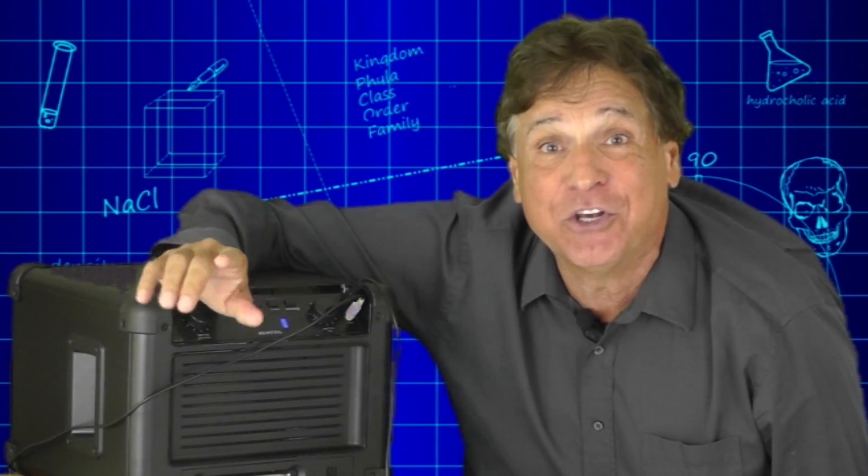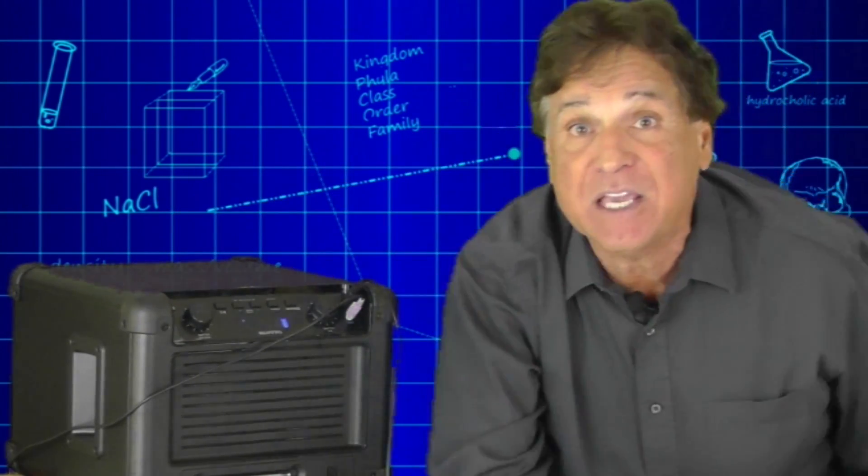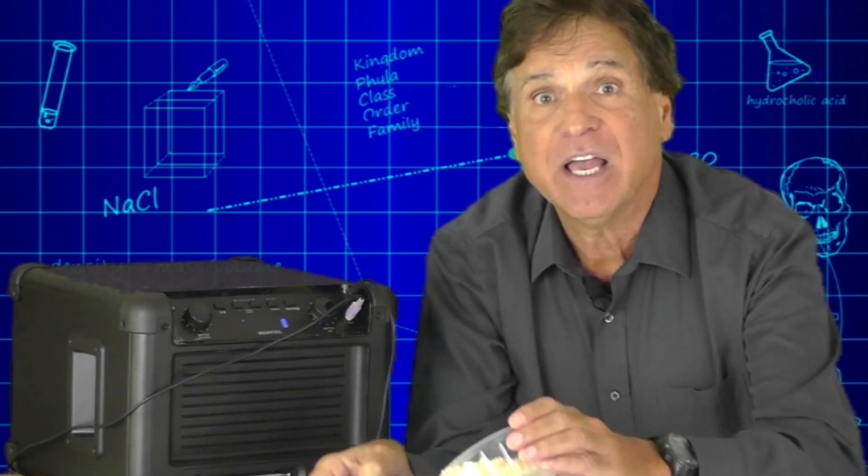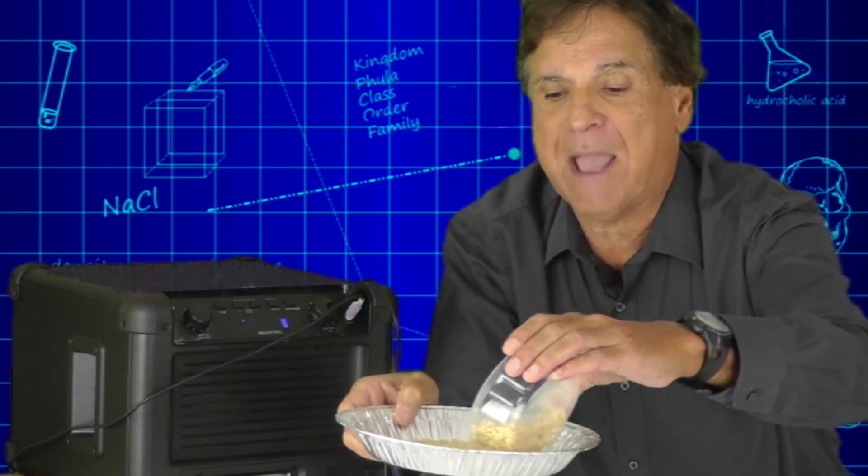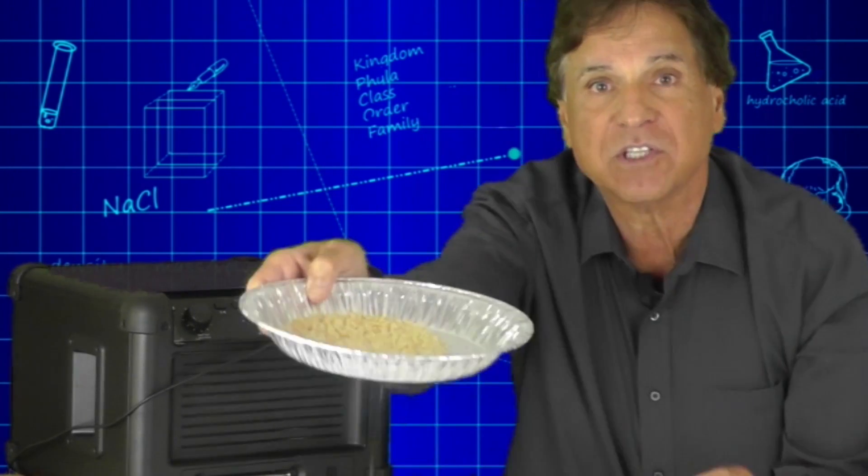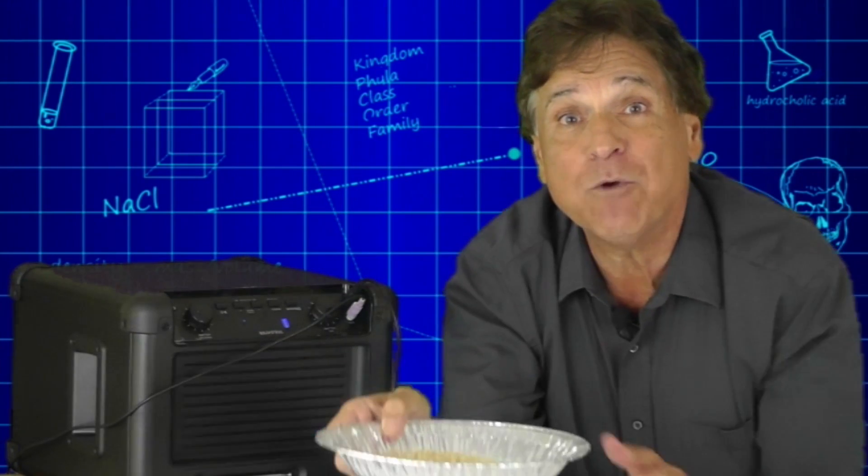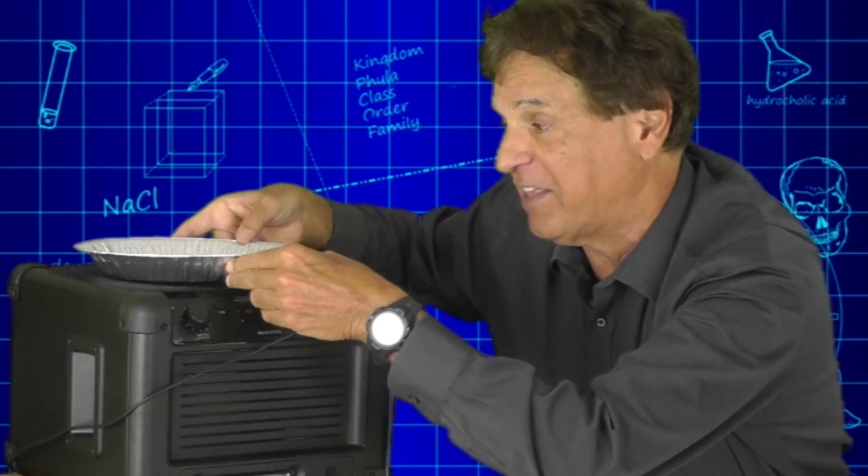Okay, what do you need to do? First, you'll need to pour some of the cereal into the aluminum pie plate, just like that. We're just going to cover the bottom. You can see it right there. Then we'll set this on top of our speaker, just like that.